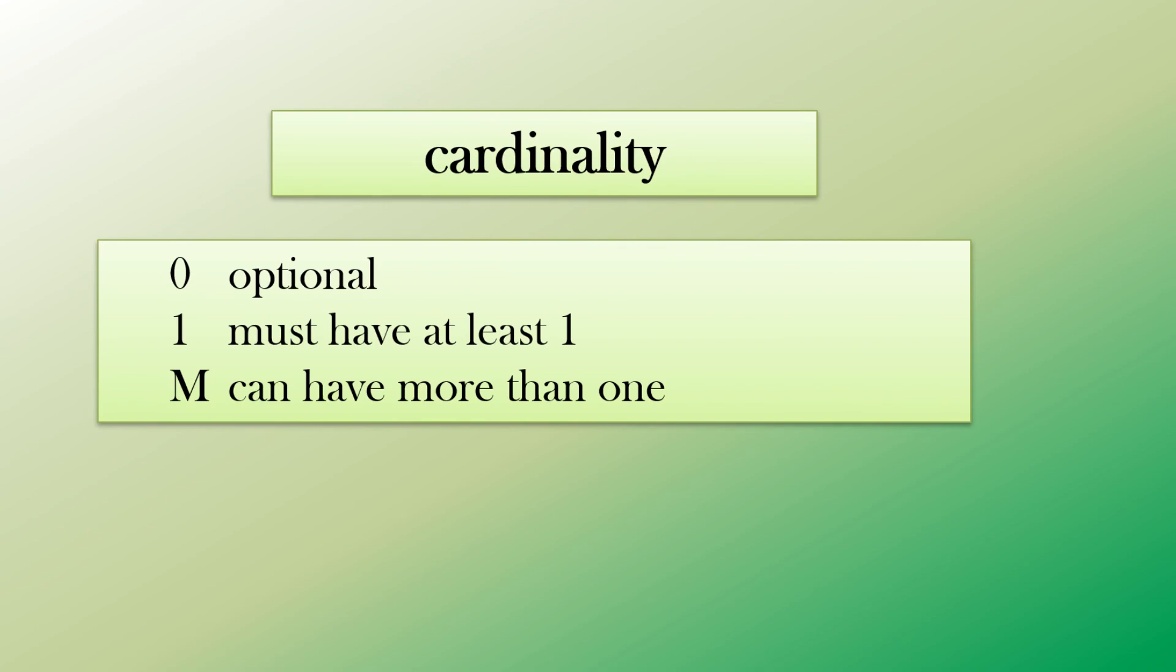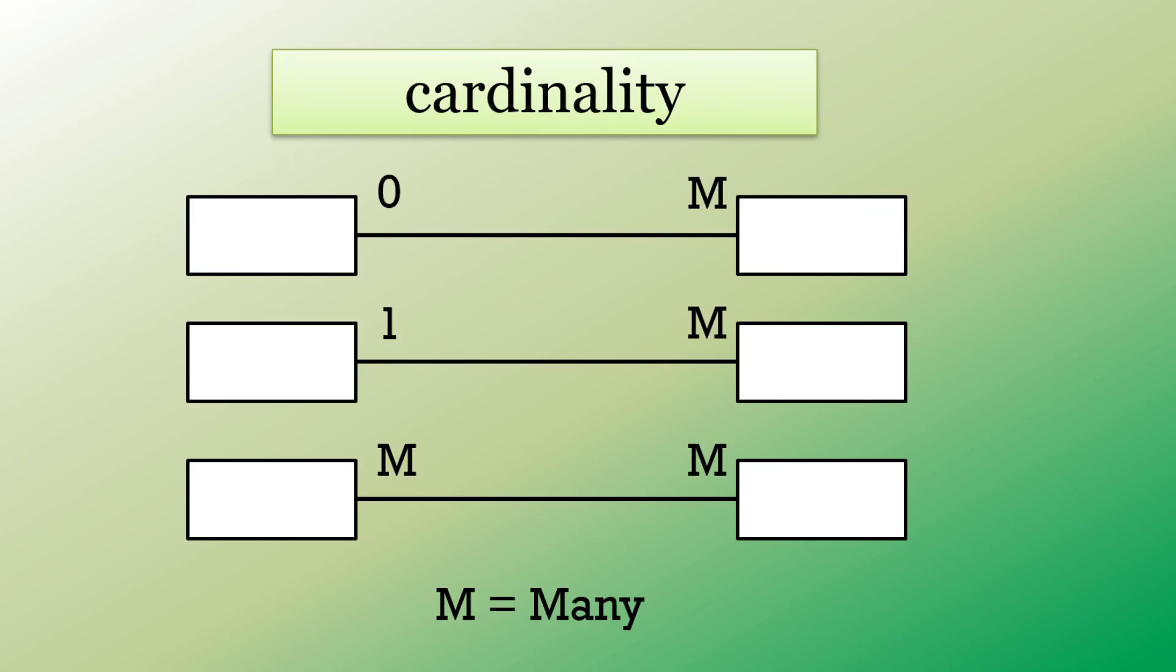Cardinality: if you have zero, it means there's an optional entry. One means you must have at least one, and many means you can have more than one. For example, if you have two entities, like customer and orders, you could have a relationship from zero to many. Meaning you don't have to have orders - a customer doesn't have to have orders. You could have many customers in a customer list who don't have to have bought an item. If a customer is only in the customer table if they've made one order or more, that's a one-to-many relationship. If you have many customers that have made many orders, that could be noted as a many-to-many relationship. M stands for many. So we have zero, one, and many.